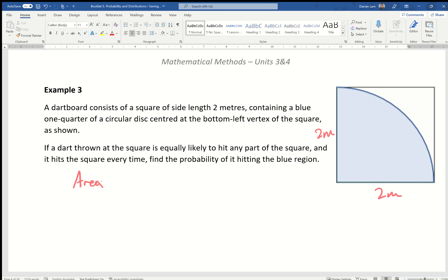To find the area of the square, we know it's two times two, which gives us four square meters. The area of the quarter circle is pi r squared, but because it's a quarter, I'm going to write times a quarter. Pi times r, r in this case being two squared, which gives us four times a quarter, which is one, so just pi. Therefore, the probability of hitting blue equals pi over four.